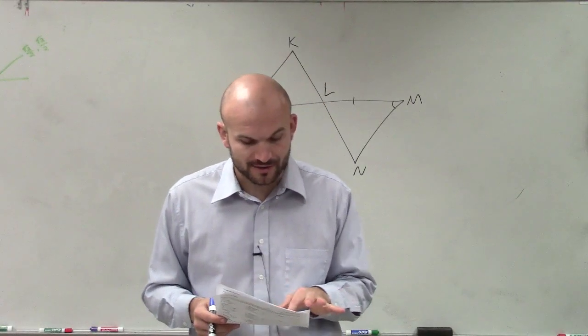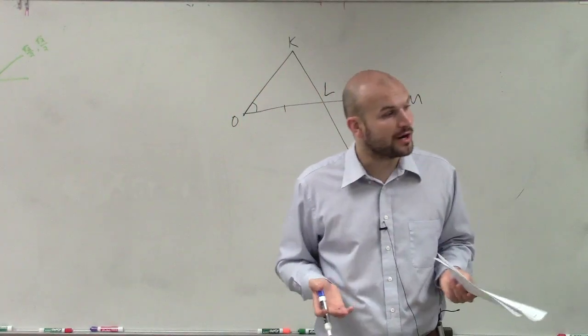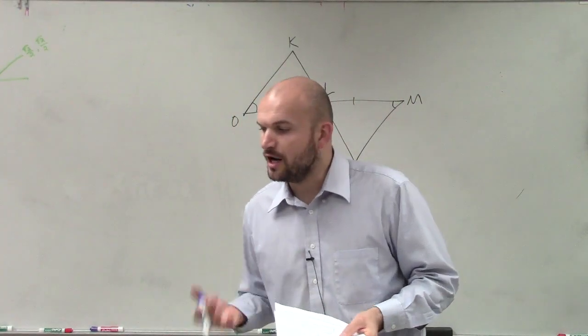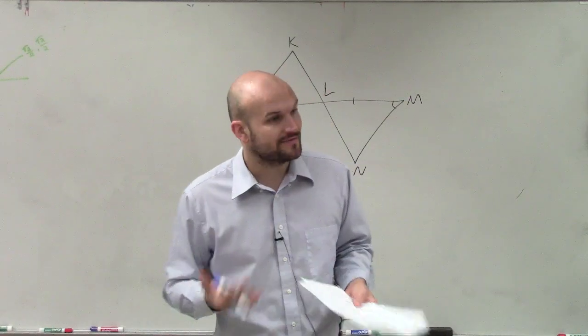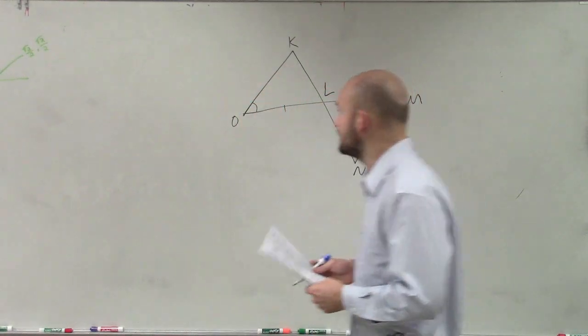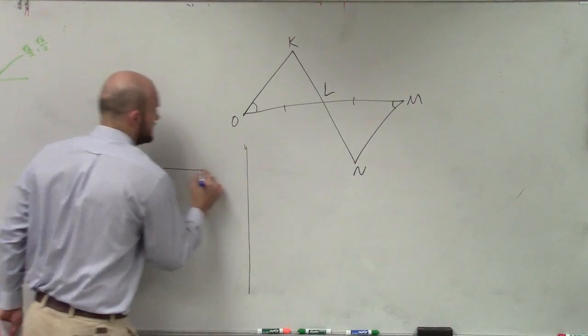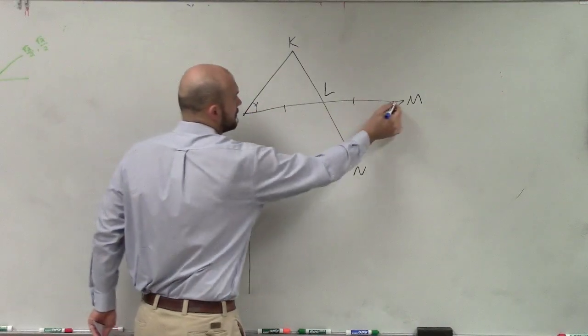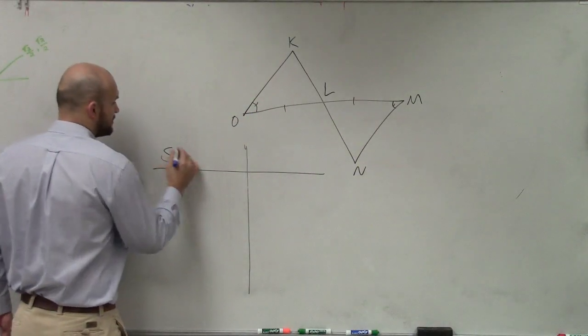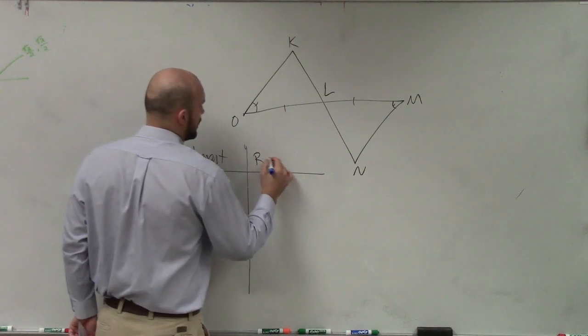And so what they're saying is we have these two triangles. We know what we need to do to prove corresponding parts of congruent triangles are congruent. We have to prove the two triangles are congruent. So when we look at this, the first thing, if I'm going to set this up, let's first just write down what is the information that we know. So we write our statement and our reason.